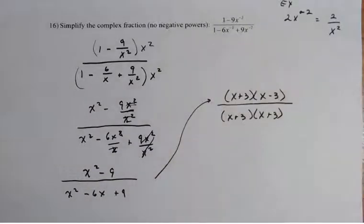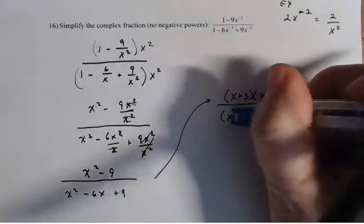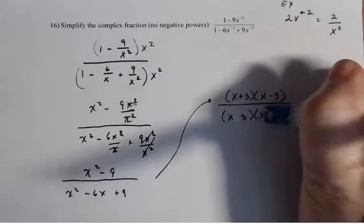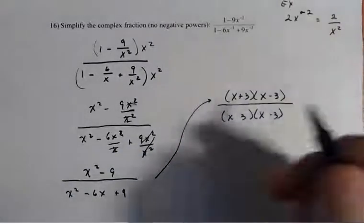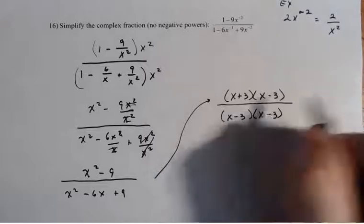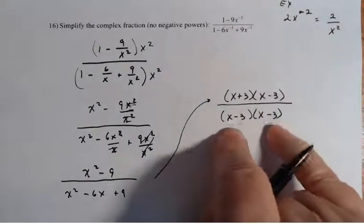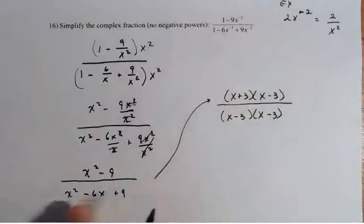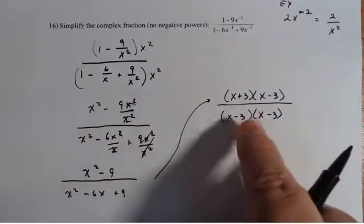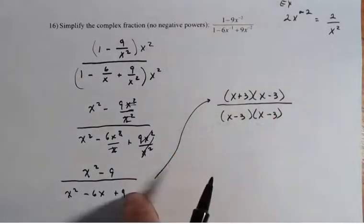So because it's a negative 6x, these both need to be negative. So then it's minus 3x plus a negative 3x gives me the negative 6x. And then the negative 3 times the negative 3 gives me positive 9.